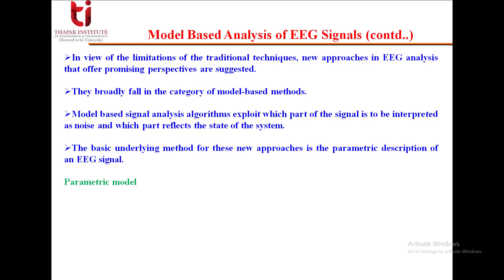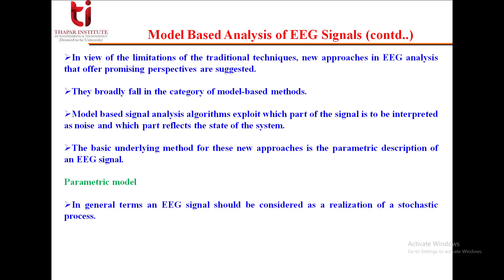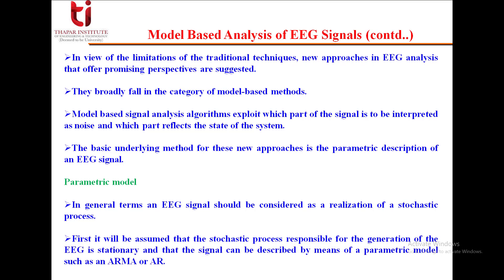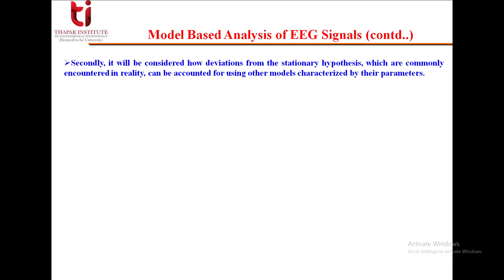In the parametric model, an EEG signal should be considered as a realization of a stochastic process. First, it will be assumed that the stochastic process responsible for the generation of the EEG is stationary, and that the signal can be described by means of a parametric model such as ARMA or AR. Secondly, deviations from the stationary hypothesis, commonly encountered in reality, can be accounted for using other models characterized by their parameters.